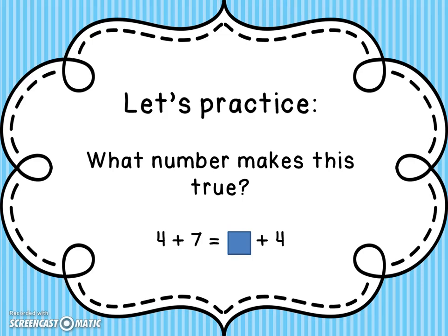Let's practice. What number makes this statement true? 4 plus 7 equals something plus 4. The answer is 7. Here's another one: 16 plus something equals 21 plus 16. We have a 16 on both sides, so we can change the order of the add-ins — the answer is 21.